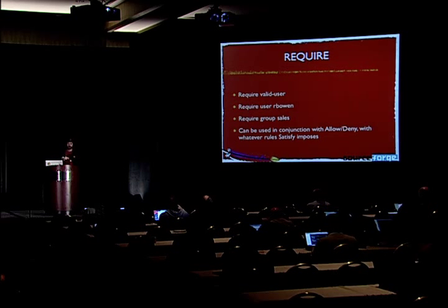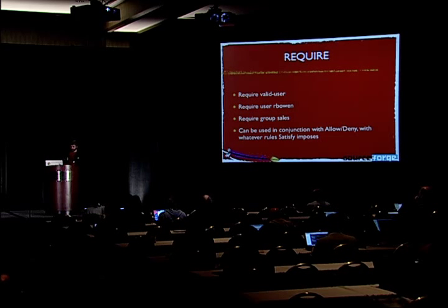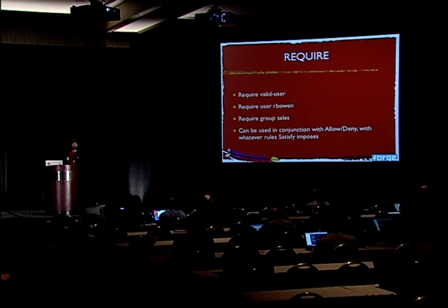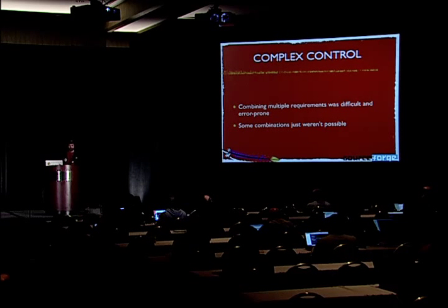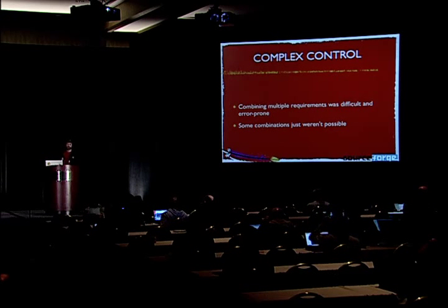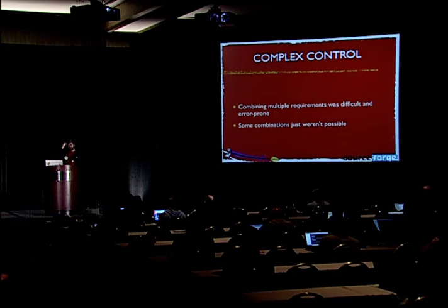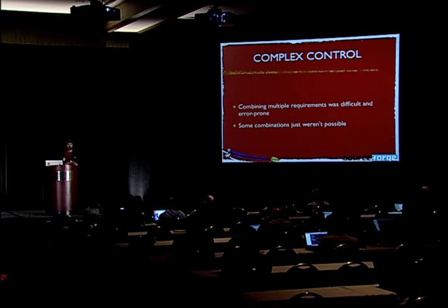In addition to the allow and deny syntax, there's also in 2.2 and earlier a require keyword, which is for user-based authentication. We can say 'require valid-user,' meaning anyone who successfully puts in a password is allowed. We can require a specific user or require a particular group. But if you want a particularly complex situation — like requiring them to be in the marketing group, not be someone who's only been on staff two weeks, and be in a particular part of the building — things start getting to the point where you can no longer express them in the 2.2 syntax.